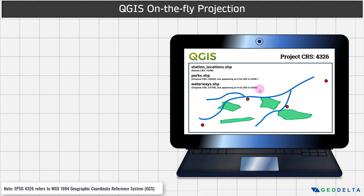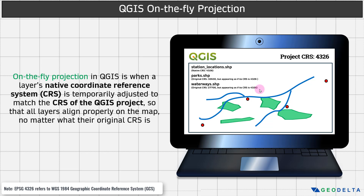And in a nutshell, this is what on the fly projection is. It's when a layer's native coordinate reference system, or layer CRS, is temporarily adjusted to match the CRS of the QGIS project, so that all layers can align properly on the map, no matter what their original coordinate reference systems happen to be.